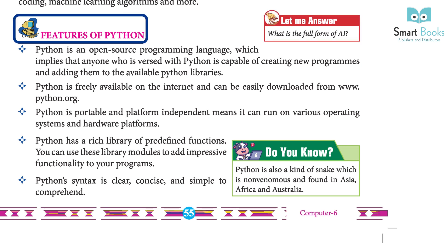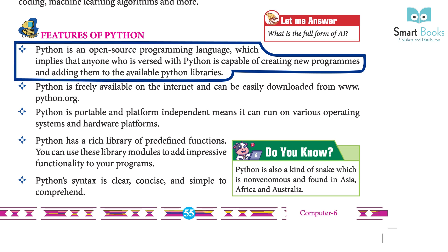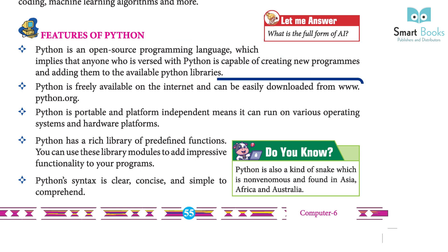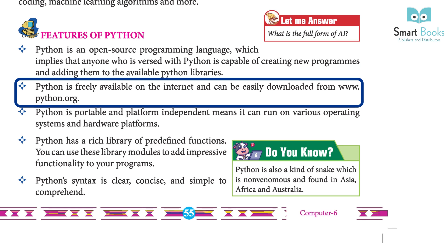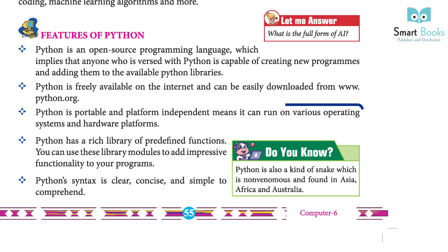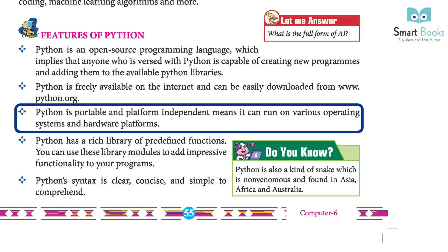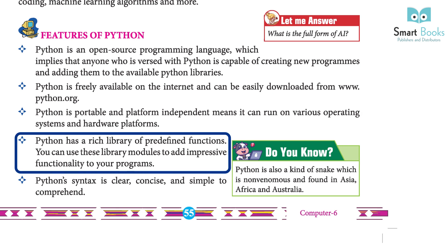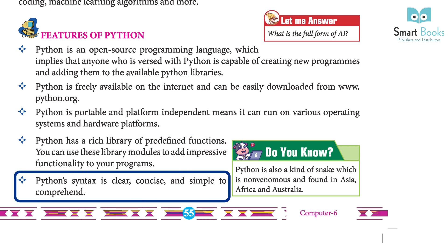Features of Python: Python is an open-source programming language, which implies that anyone versed with Python is capable of creating new programs and adding them to the available Python libraries. Python is freely available on the internet and can be easily downloaded from www.python.org. Python is portable and platform-independent, meaning it can run on various operating systems and hardware platforms. Python has a rich library of predefined functions; you can use these library modules to add impressive functionality to your programs. Python's syntax is clear, concise, and simple to comprehend.